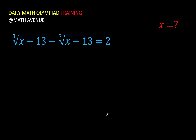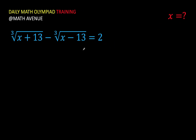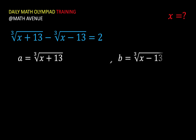Now let's solve this problem together. Let's inspect the given. We have two terms, both are cube roots — in the radicands we have x plus 13 and x minus 13. They are almost identical except for the operations. When we have problems like this where the terms are more complicated, one technique is to substitute a variable to simplify the equation. Let's use variable a for the first term and variable b for the second term.